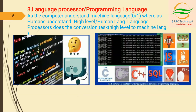Coming to language processor or programming language — this is one of the system software. Each software is created by writing programs. Some popular programming languages are C, C++, and Java. As we know, a computer can understand machine language which comprises zeros and ones. Therefore, programs written in high-level programming languages cannot be recognized by the computer directly. Here, a language processor plays a vital role in translating the programming language into machine language.